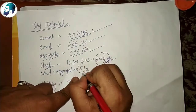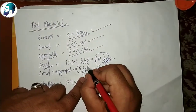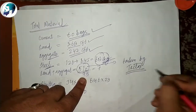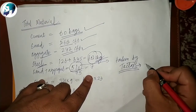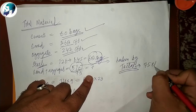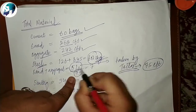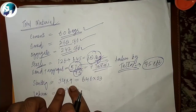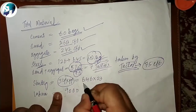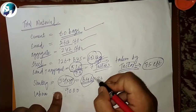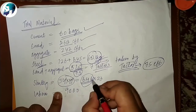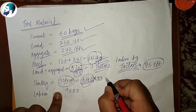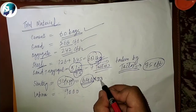In my area, sand and aggregate are transported by tractor. One tractor takes approximately 75 CFT. So 510 / 75 = approximately 7 tractors of sand and aggregate. Shuttering area is 34 × 19 = 646 square feet for the slab, and the rate is approximately 23 rupees per square foot.